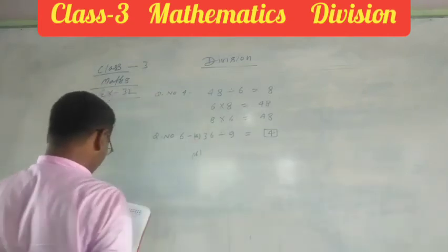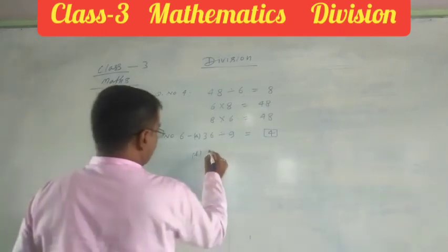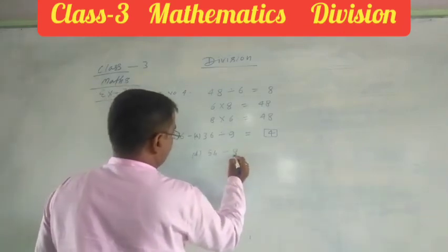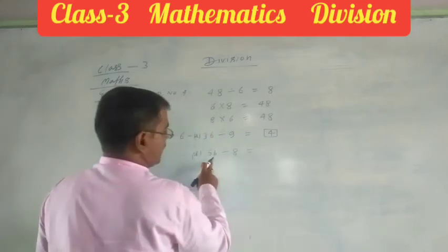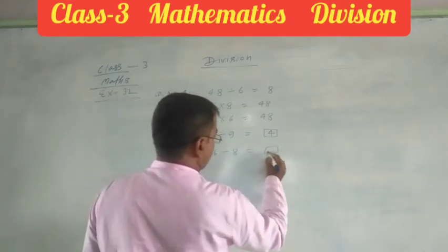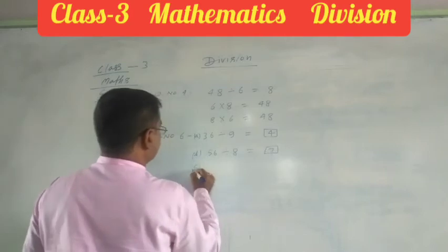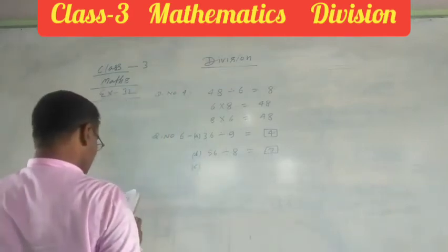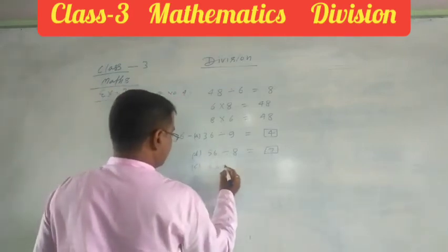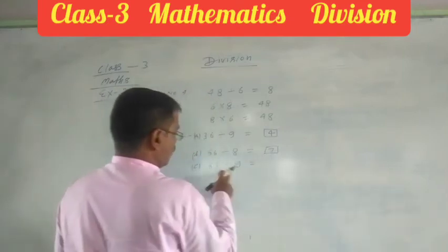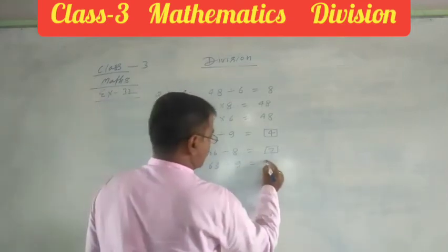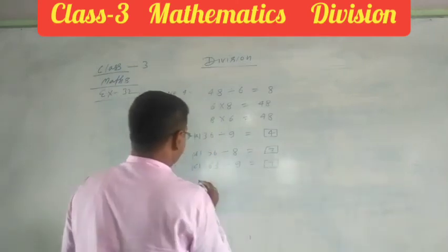B: 56 divided by 8. How many times we read table 8 to get 56? That your answer is 7. C: 63 divided by 9. How many times we read table 9 to get 63? Your answer is 7.